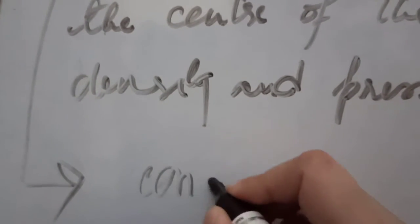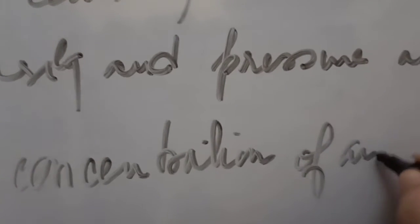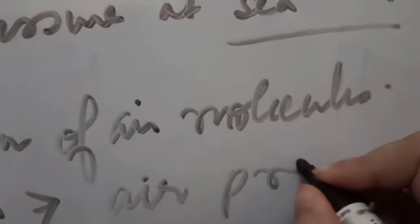Sea level is the lower level, so the gravitational attraction is stronger here. Due to this gravitational pull, the concentration of air molecules is greater, so air pressure is higher at lower altitudes.